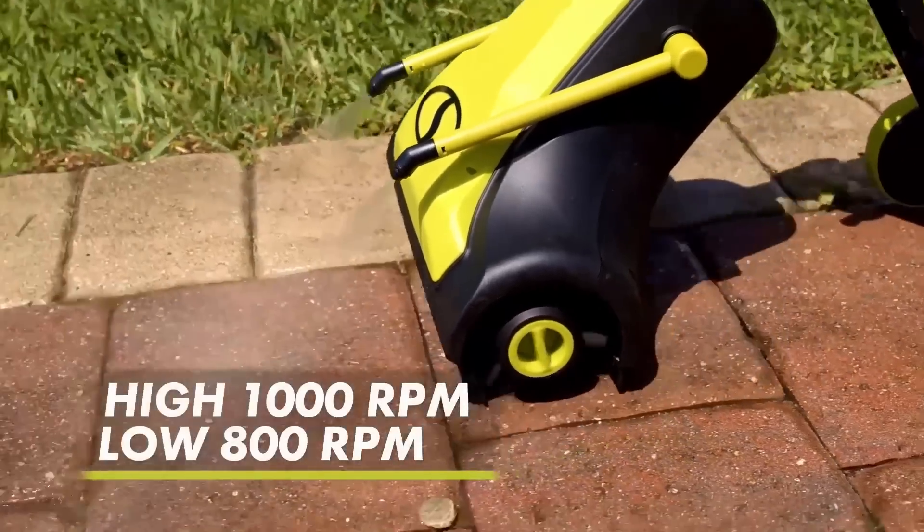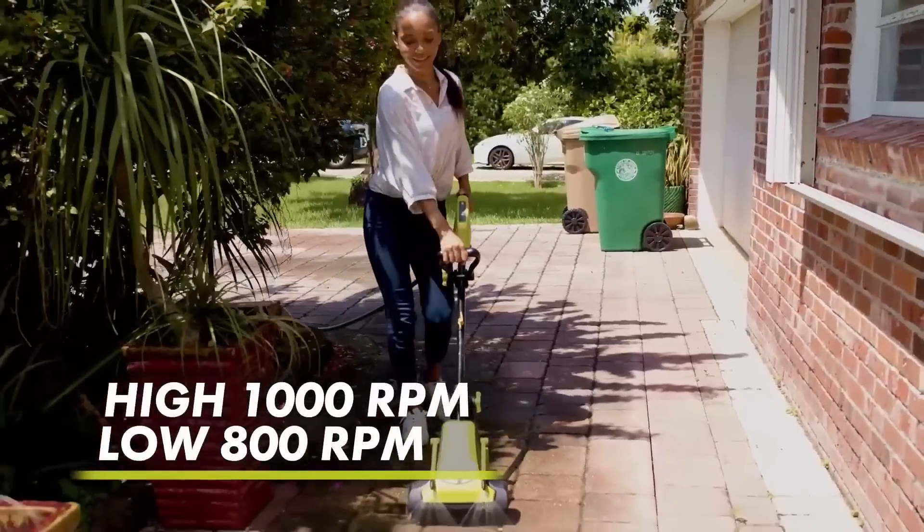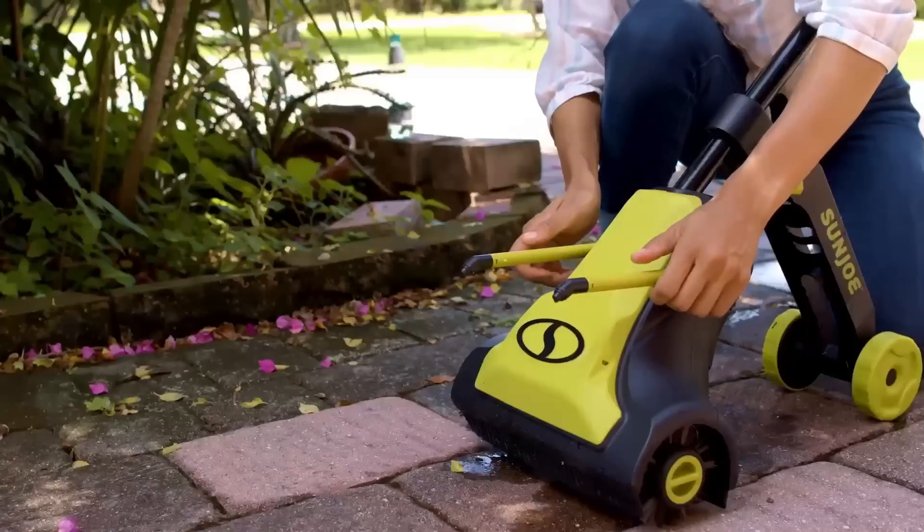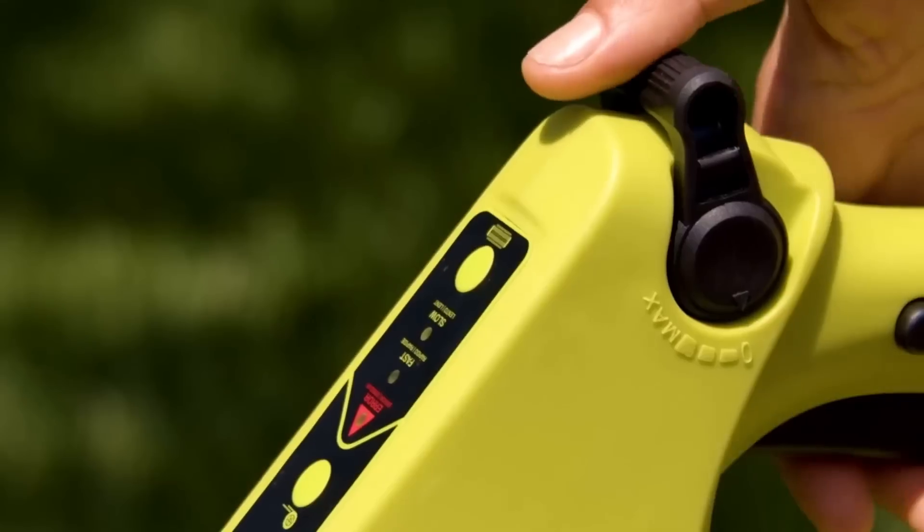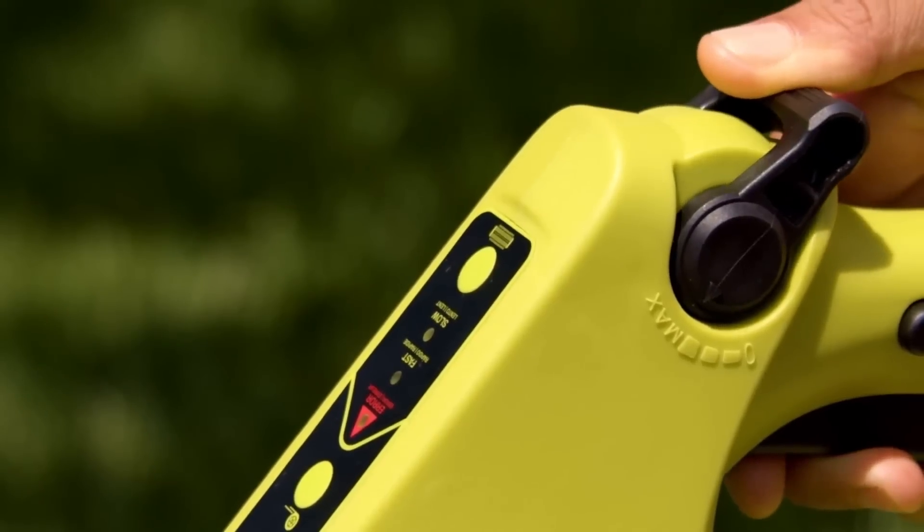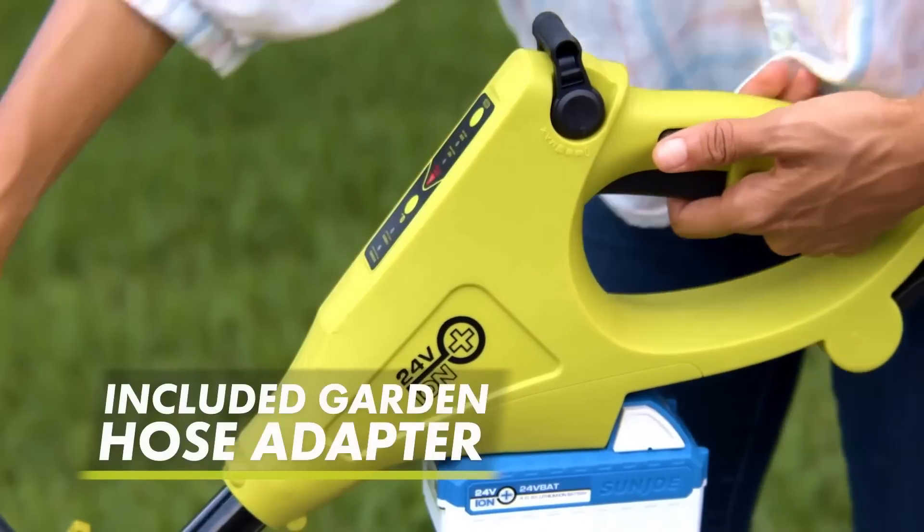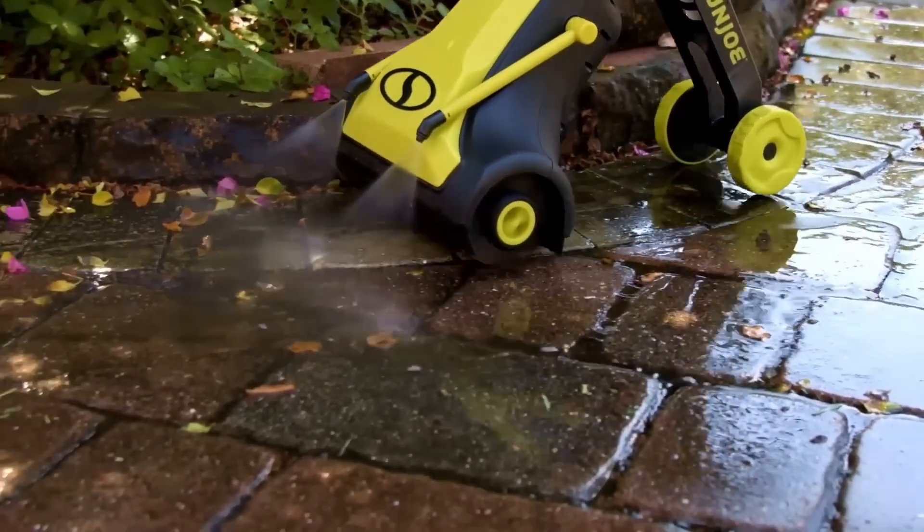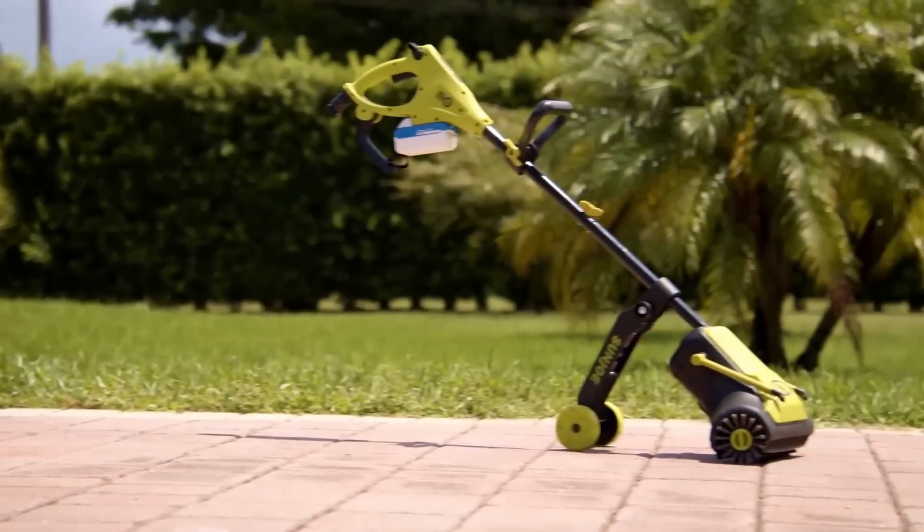Its dual onboard spray nozzles and variable water flow can be adjusted to the perfect angle, rinsing away years of wear and weathering. Simply connect your standard garden hose using the included adapter and you're ready to go. Plus, Sunjo comes equipped with a rubber mud flap to prevent splash back while cleaning.